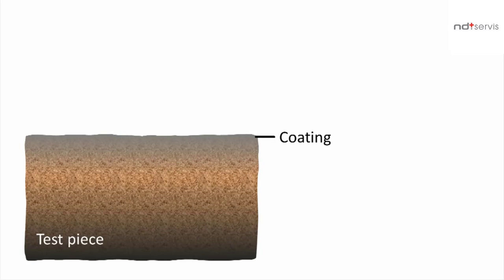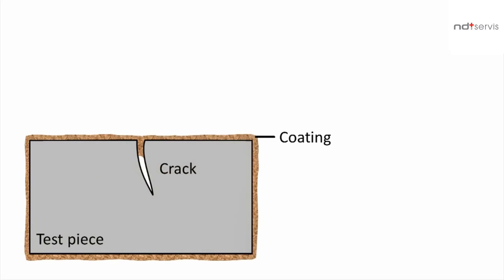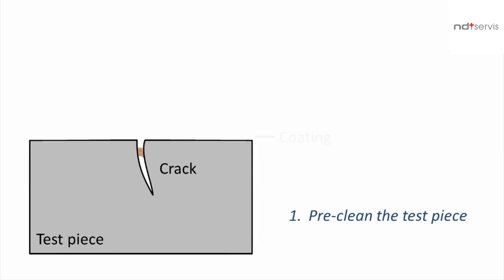Rust or paint masks material defects, as shown in the sectional view. Therefore, the first step is always the pre-cleaning of the test piece surface. This must be done very thoroughly so that any defects present, such as a crack, are open to the surface.